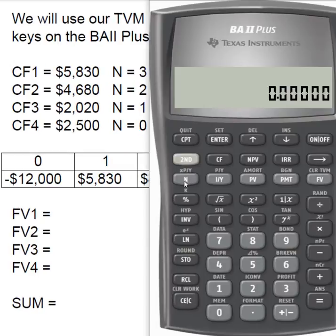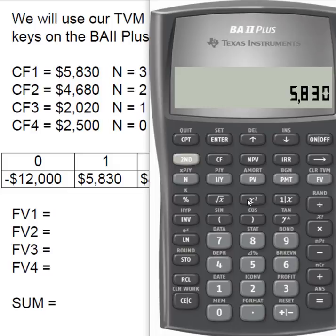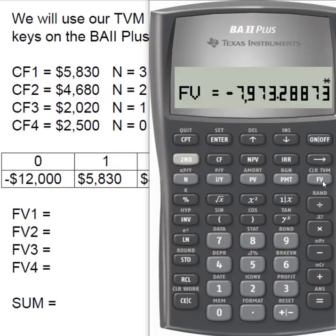For the first cash flow, I have N equals three, IY equals 11% (the cost of capital), and present value of $5,830. With no payment, I compute the future value. That first cash flow becomes $7,973.29. Write that number down and clear your time value of money keys.